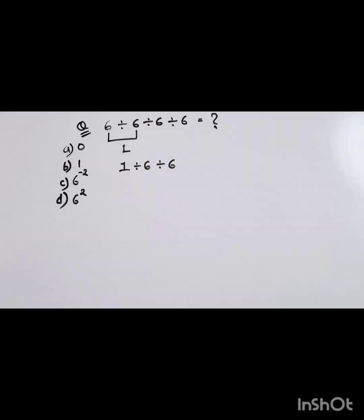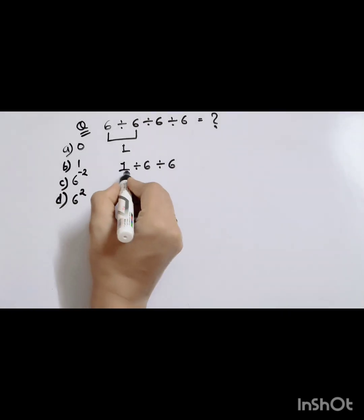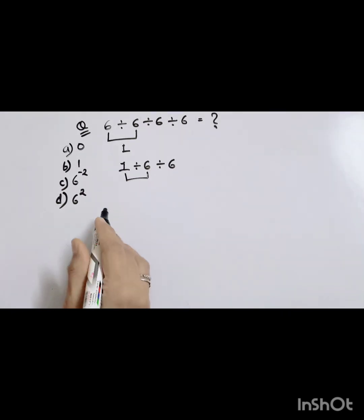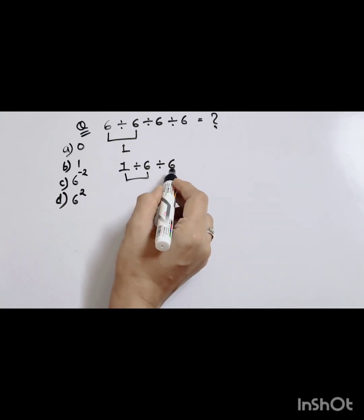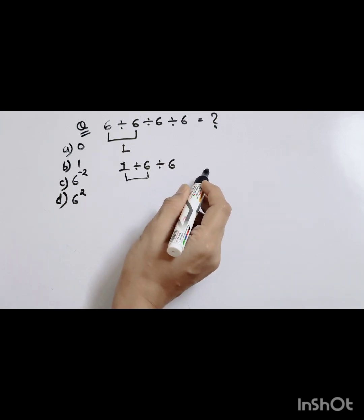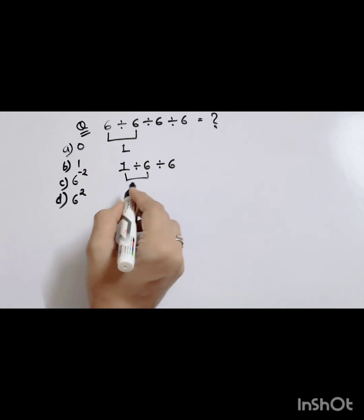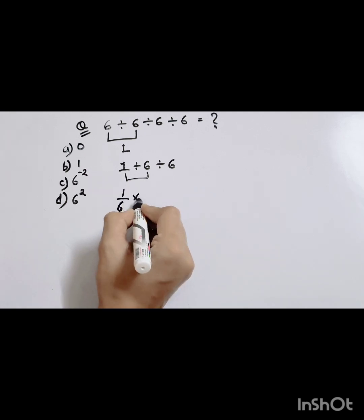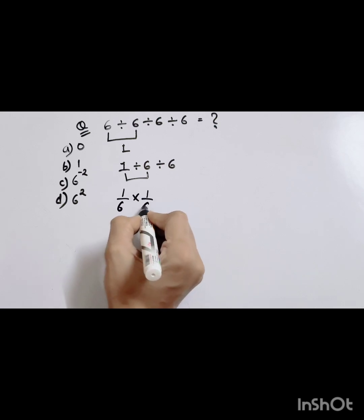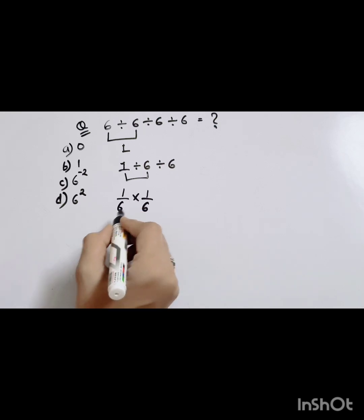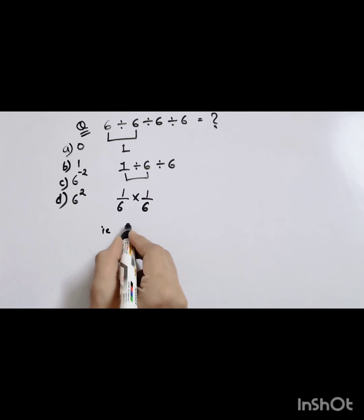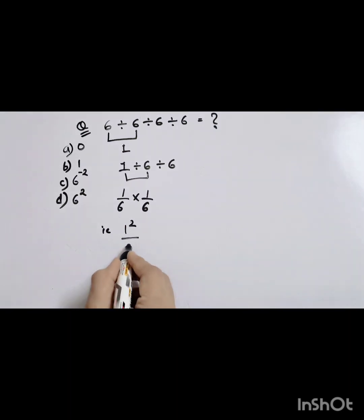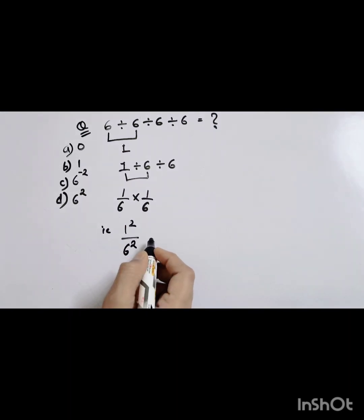Now 1 divided by 6, and this divided by 6 turns into times 1 over 6 — that is 1/6 into 1/6. I can write it as 1 squared over 6 squared.